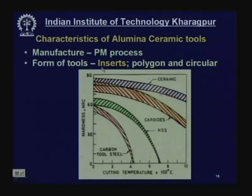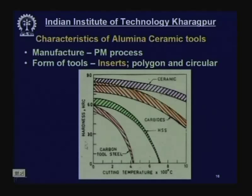Alumina ceramic tools are available only as inserts: square, triangular, or other polygon inserts and circular button types. The characteristic of ceramics like alumina shows hardness of the tool material versus cutting temperature. Cutting temperature can go up to 400 to 1000°C.